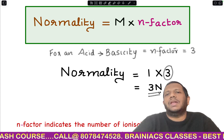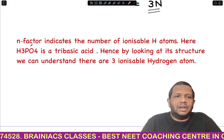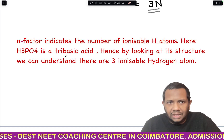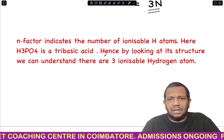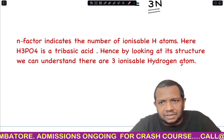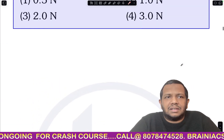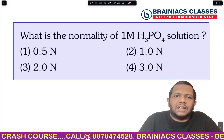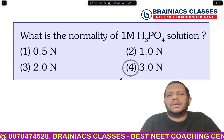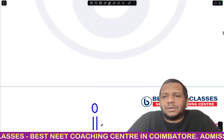Substituting: normality = 1 × 3 = 3 Normal. The n factor for an acid is the number of ionizable hydrogen atoms. H₃PO₄ is a tribasic acid with three ionizable hydrogen atoms, so its basicity equals 3. The correct answer is option 4: 3 Normal.